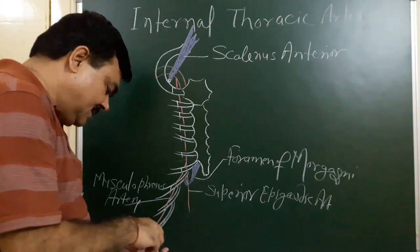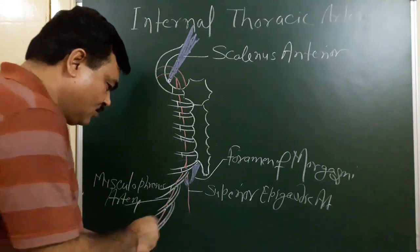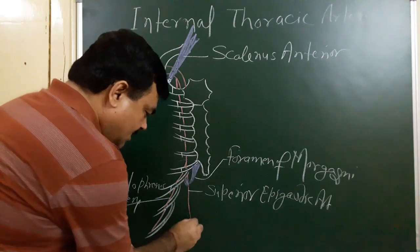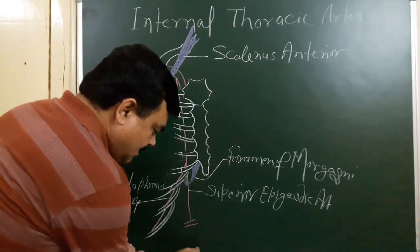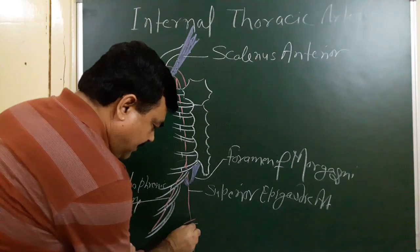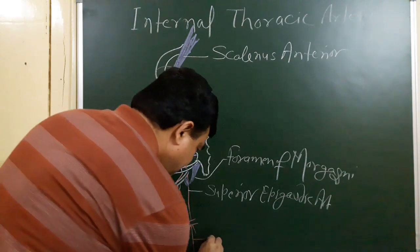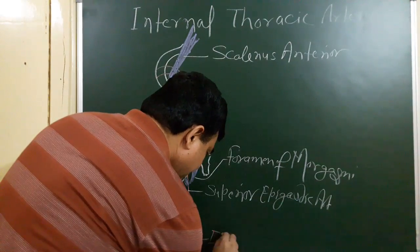It passes through the foramen of Morgagni into the anterior abdominal wall and into the rectus sheath. In the rectus sheath, it anastomoses with the inferior epigastric artery. This is the inferior epigastric artery.